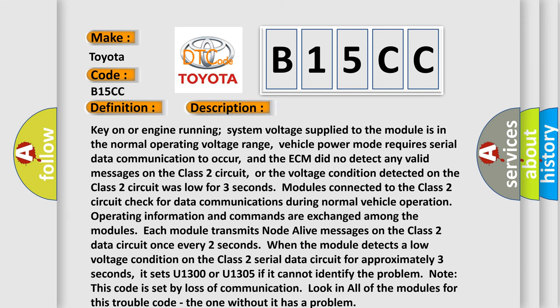Key on or engine running: system voltage supplied to the module is in the normal operating voltage range. Vehicle power mode requires serial data communication to occur, and the ECM did not detect any valid messages on the Class 2 circuit, or the voltage condition detected on the Class 2 circuit was low for three seconds.